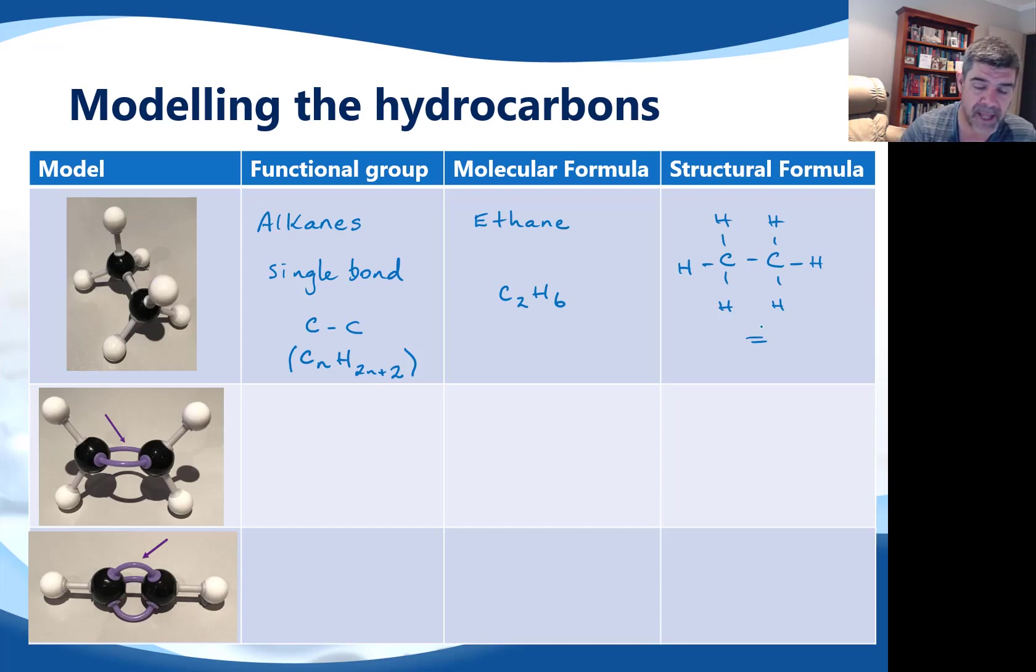The second functional group that we want to look at is the alkenes. The alkenes are characterized by a double bond, and the double bond occurs again between the two carbons. If I look at the specific example that I have here, you can see where the double bond is identified between these two carbons. So again, I have two carbons, but because the double bond is present, it's removed effectively one hydrogen from each of those two carbon atoms. So now my formula for ethene is C2H4. This is two less carbons than I had previously.